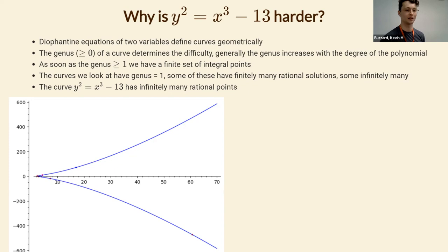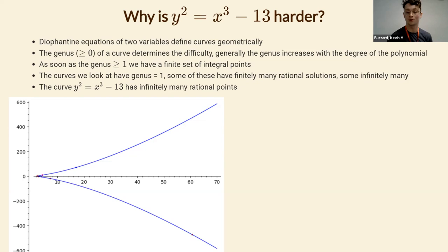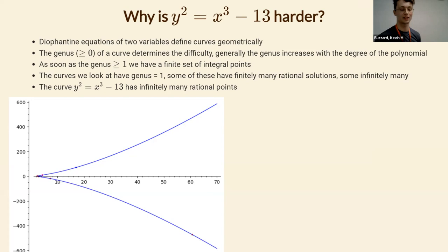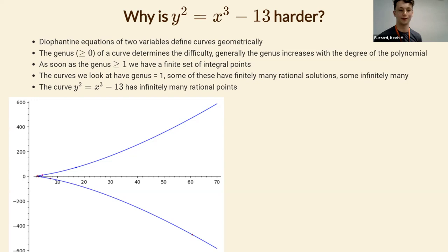The genus of a curve — roughly the number of holes when plotted as a complex surface — increases essentially with the degree of the equation. If you change x squared to x cubed the genus may go up and the equation gets harder to resolve. As soon as the genus is at least one, we have a finite set of integral points, which means the solution set could in principle be written as a list.